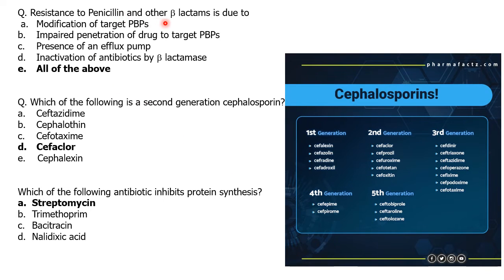Next question: resistance to penicillin and other beta-lactams is due to — modification of target PBPs, impaired penetration of the drug to target PBP, presence of an efflux pump, or inactivation of antibiotics by beta-lactamases? All of these are mechanisms bacteria have developed to gain resistance to penicillin. The answer is all of the above.